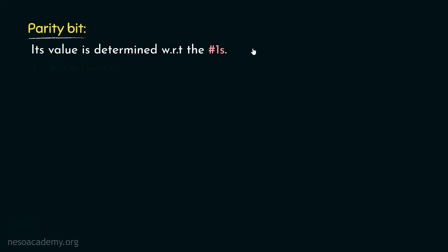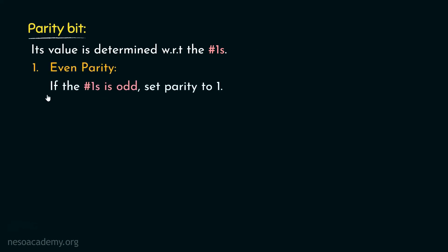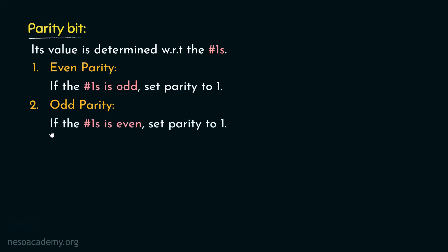There are two types of parity. In even parity, if the number of ones in the code is odd, we set the parity to 1 — this makes the total number of ones even, hence the name even parity. In odd parity, if the number of ones in the code is even, we set the parity to 1 — this makes the total number of ones odd, hence the name odd parity.